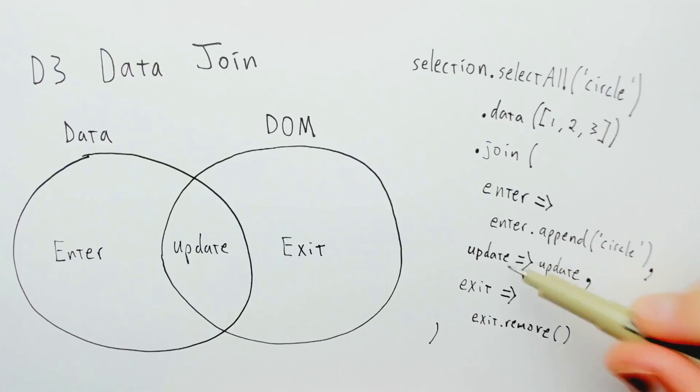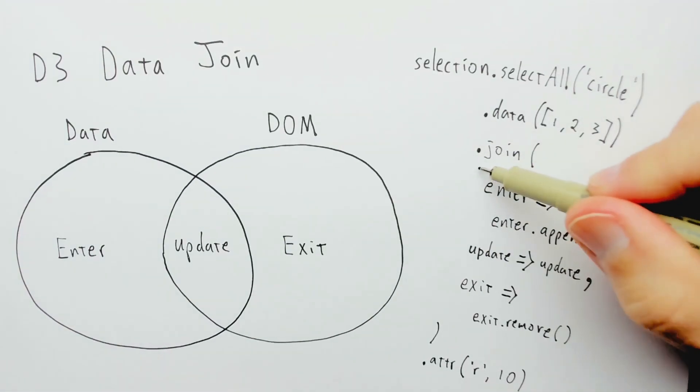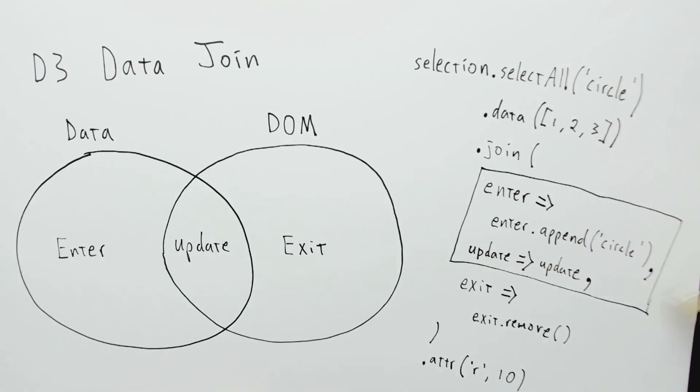It handles enter, update, and exit. Now, it turns out that this .join returns a selection. And that's why you can say .attr something like, I don't know, r gets to be 10. But what is that thing? Like, what is .attr acting on? It turns out that .join returns the merged enter and update selection. This means that if a circle is either newly appended or has existed before, then this gets applied to that selection.